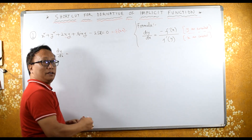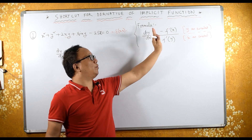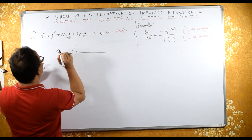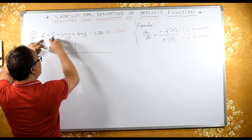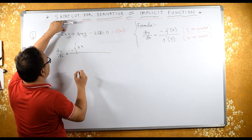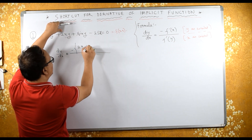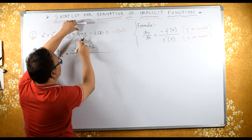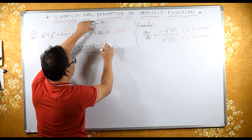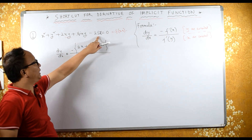Therefore dy/dx equals minus f'x. Considering y as a constant, differentiating with respect to x: we get 2x, then this term is constant giving 0, then considering y as constant we get plus 2y, and d/dx of x is 1. This term is also 0 because it is constant. We get minus 25, since we are considering y as a constant.